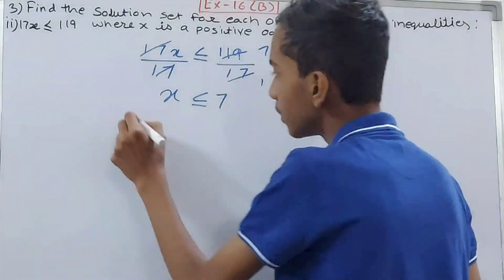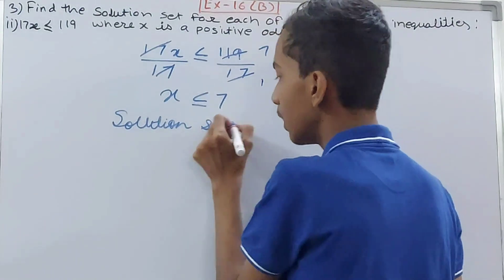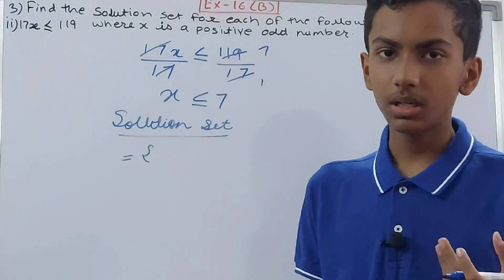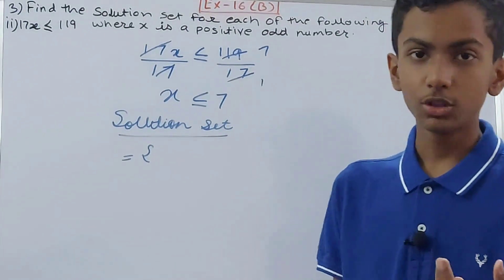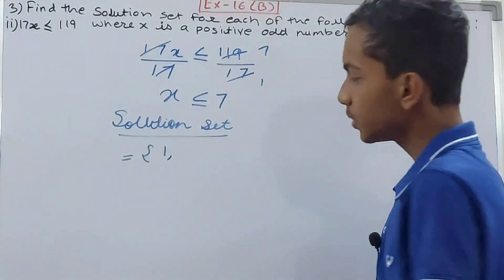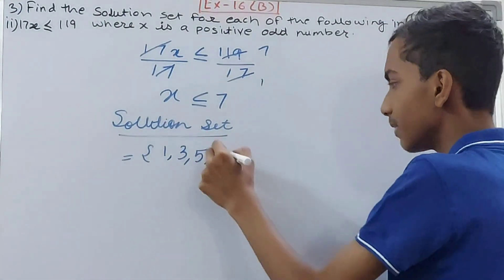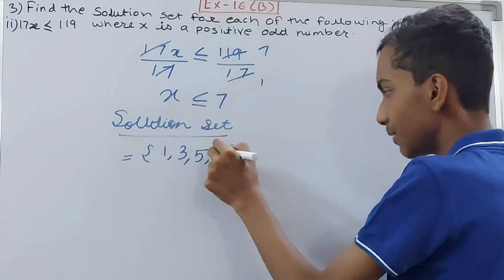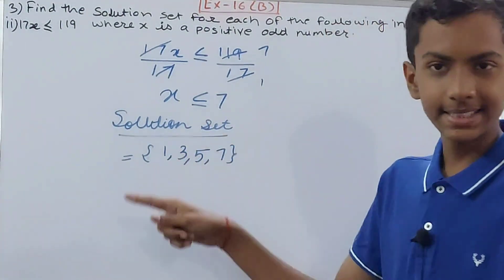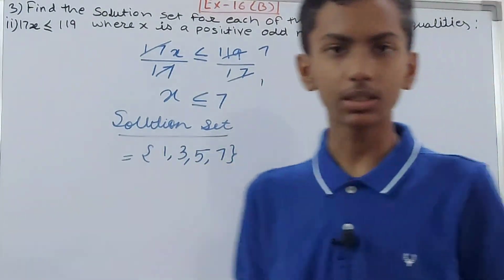Now the solution set: x must be a positive odd number and less than or equal to 7. Positive odd numbers starting from 1 are: 1, 3, 5, 7. We can include 7 because it is less than or equal to 7. So the solution set is {1, 3, 5, 7}.